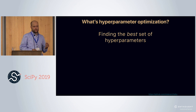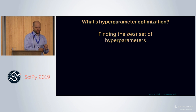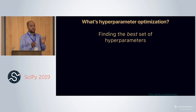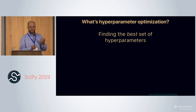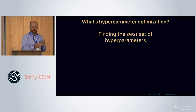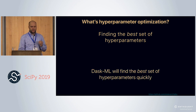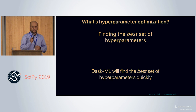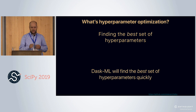So what is hyperparameter optimization? Hyperparameter optimization is finding the best values for those six hyperparameters, in terms of validation accuracy. My claim is that DaskML will do this process faster and more efficiently, and find better hyperparameters.